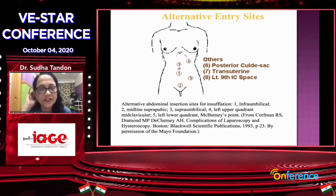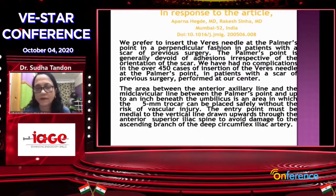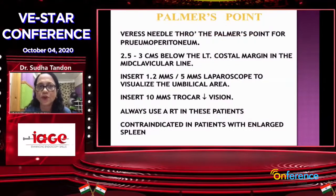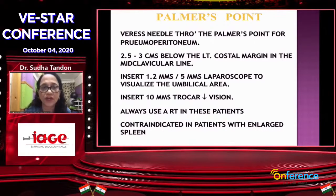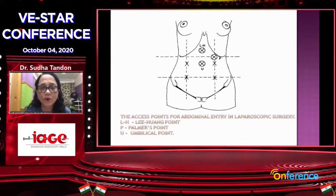This figure shows the alternative entry sites, and the most common one is the Palmer's point. A very nice article by Dr. Rakesh Sinha used the Palmer's point with no complications. The Palmer's point is 2.5 to 3 centimeters below the left costal margin in the mid-clavicular line. You put a 5 mm laparoscope or a hysteroscope, then place the 10 mm trocar cannula under vision. Always use a Ryle's tube, and it is contraindicated in patients with an enlarged spleen. The Li Huang point is also a very good point, and quite a few laparoscopic surgeons are fond of it, where you can use direct entry.